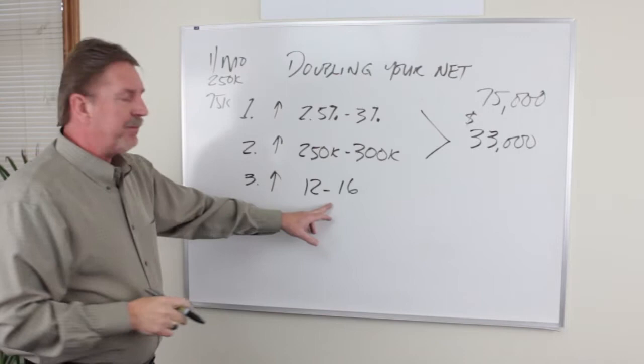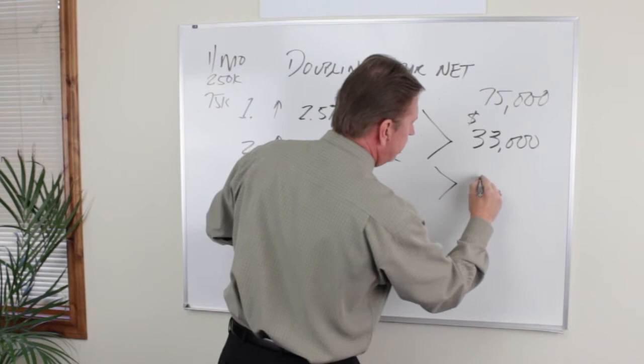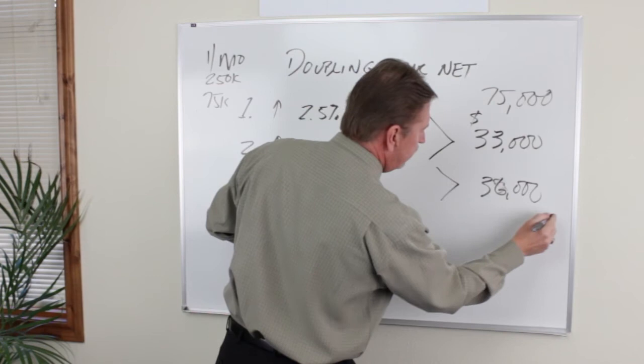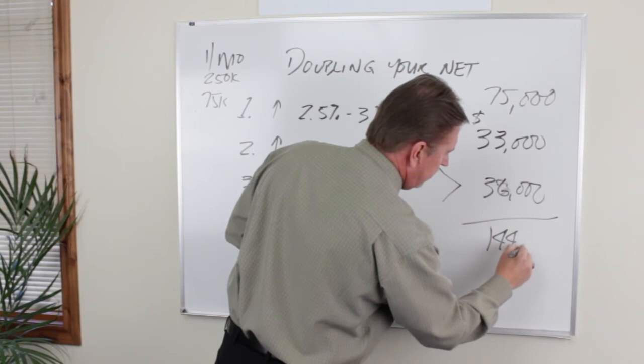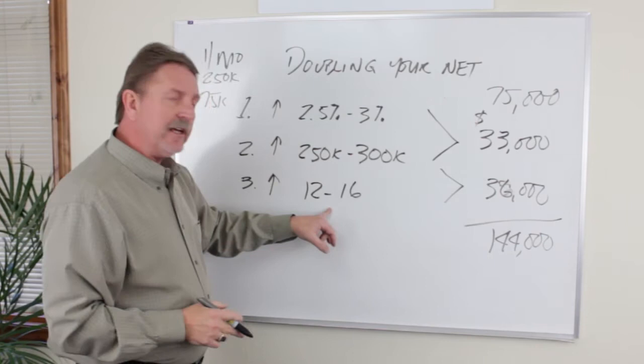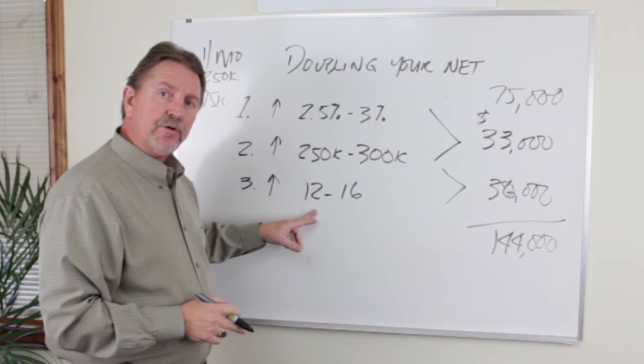If you're able to increase your transactions from 12 to 16, you're going to bring in, excuse me, it's actually $36,000, another $36,000 a year. Now watch what happens. $144,000. You've just about doubled your income and the only increase you had was four transactions.